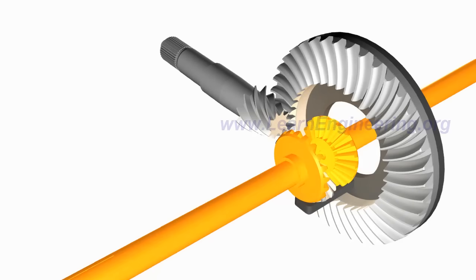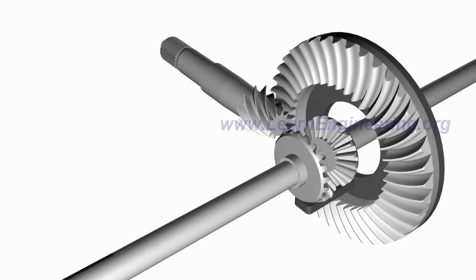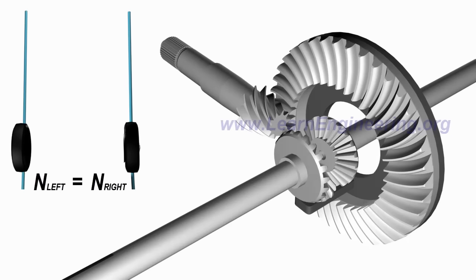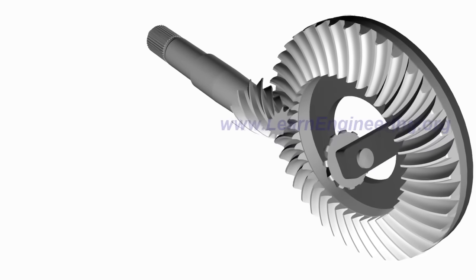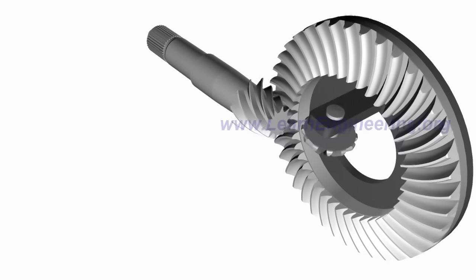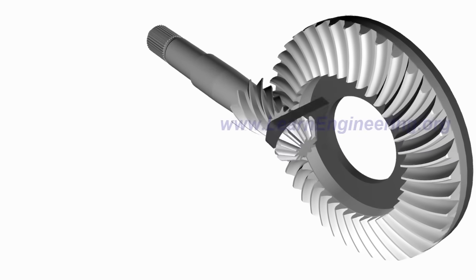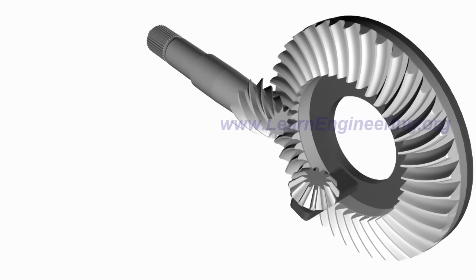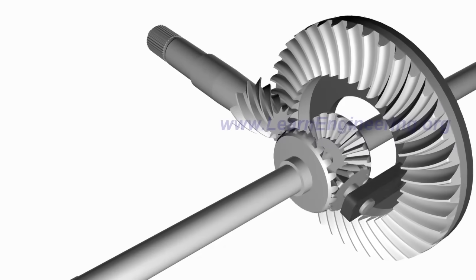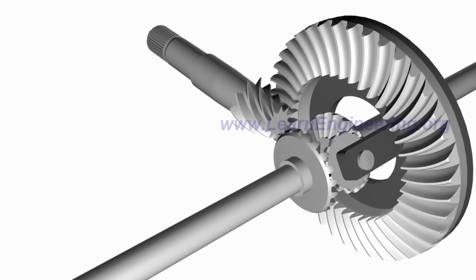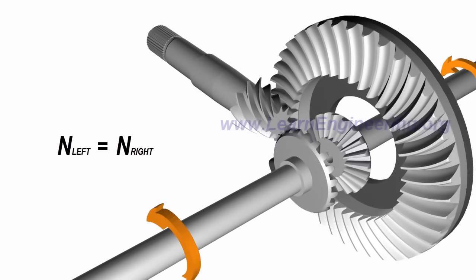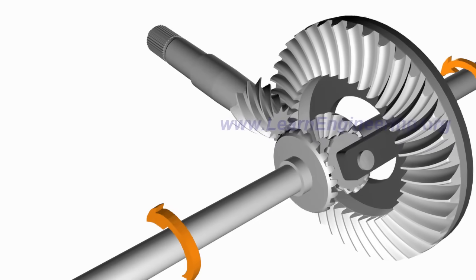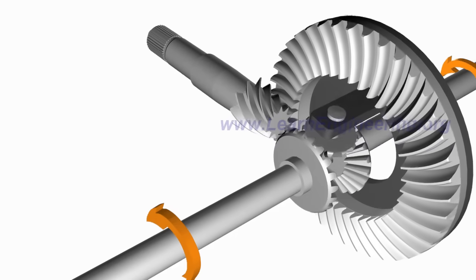Now let's consider different cases. When the vehicle moves straight, the spider gear rotates along with the ring gear but does not rotate on its own axis. The spider gear will push and make the side gears turn, and both will turn at the same speed. In other words, when the vehicle is moving straight, the spider and side gear assembly moves as a single solid unit.